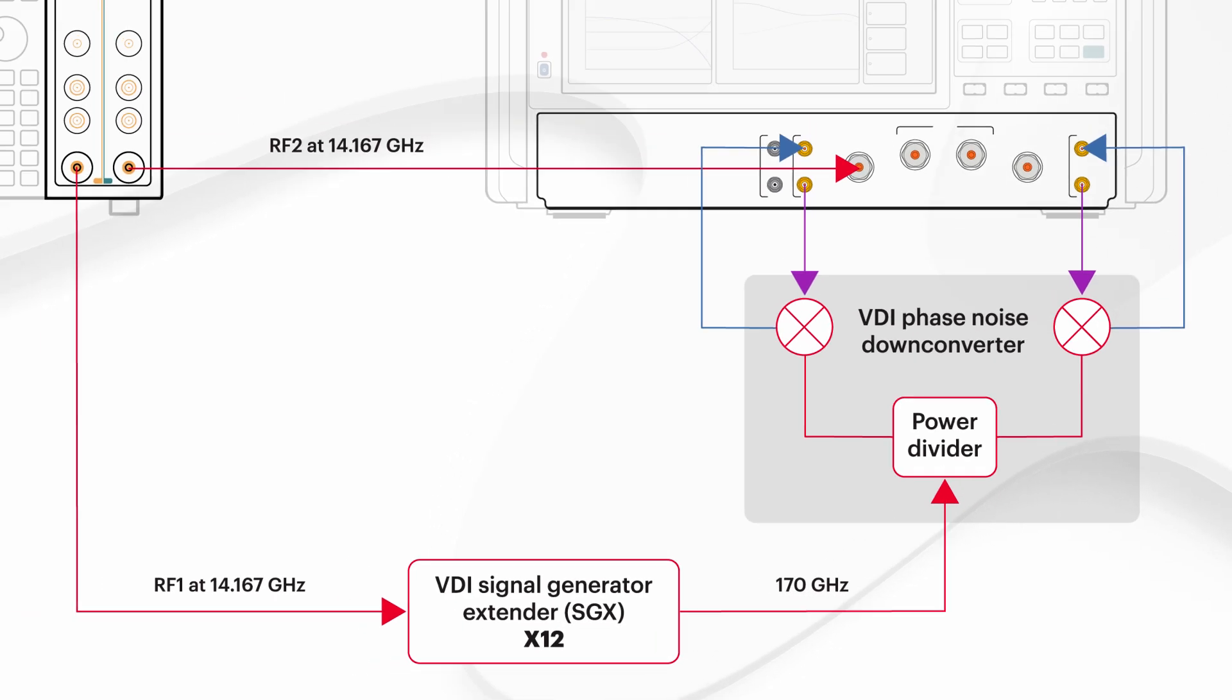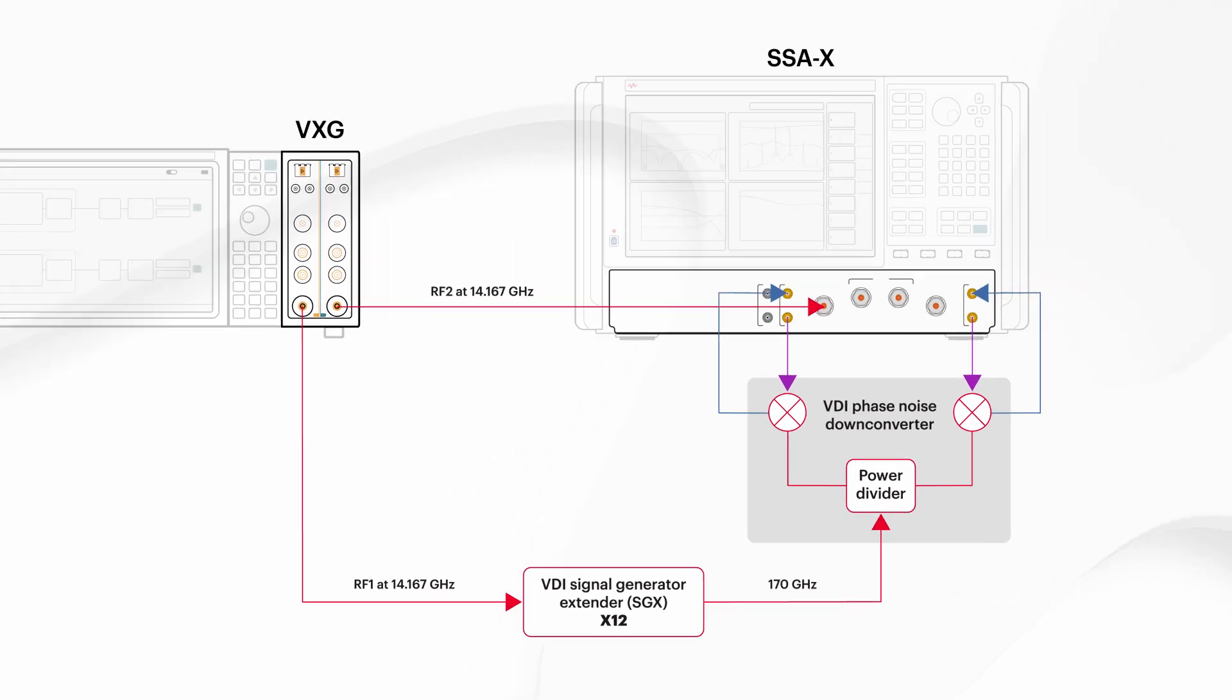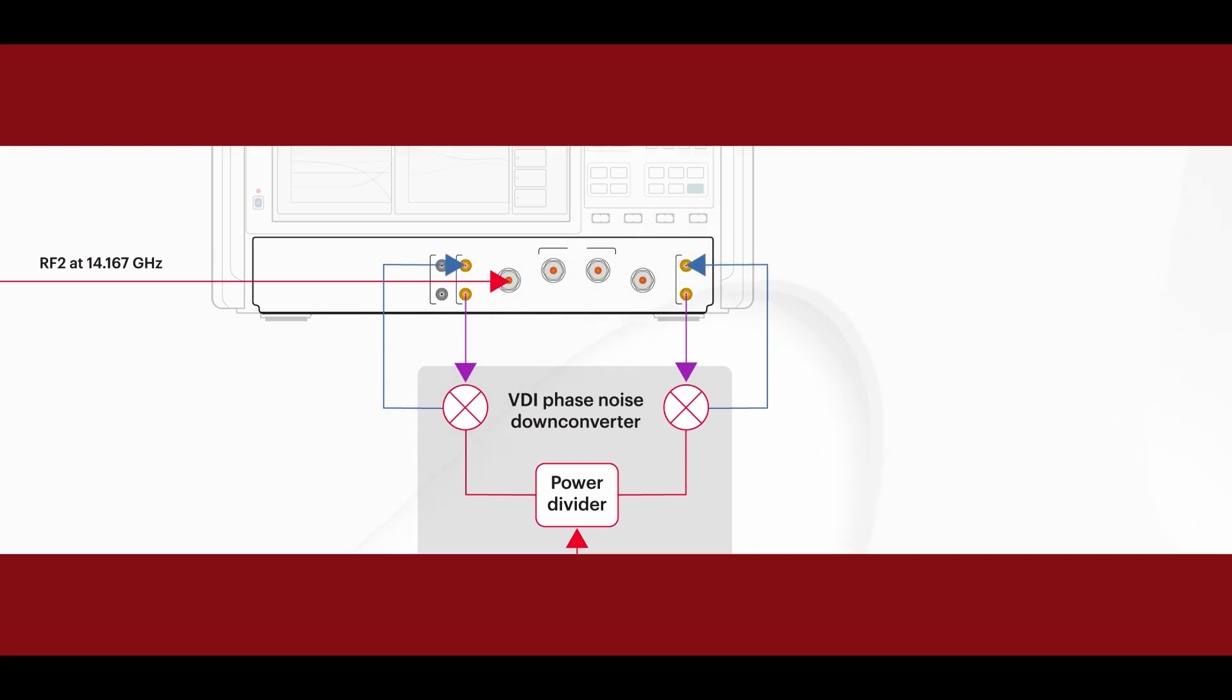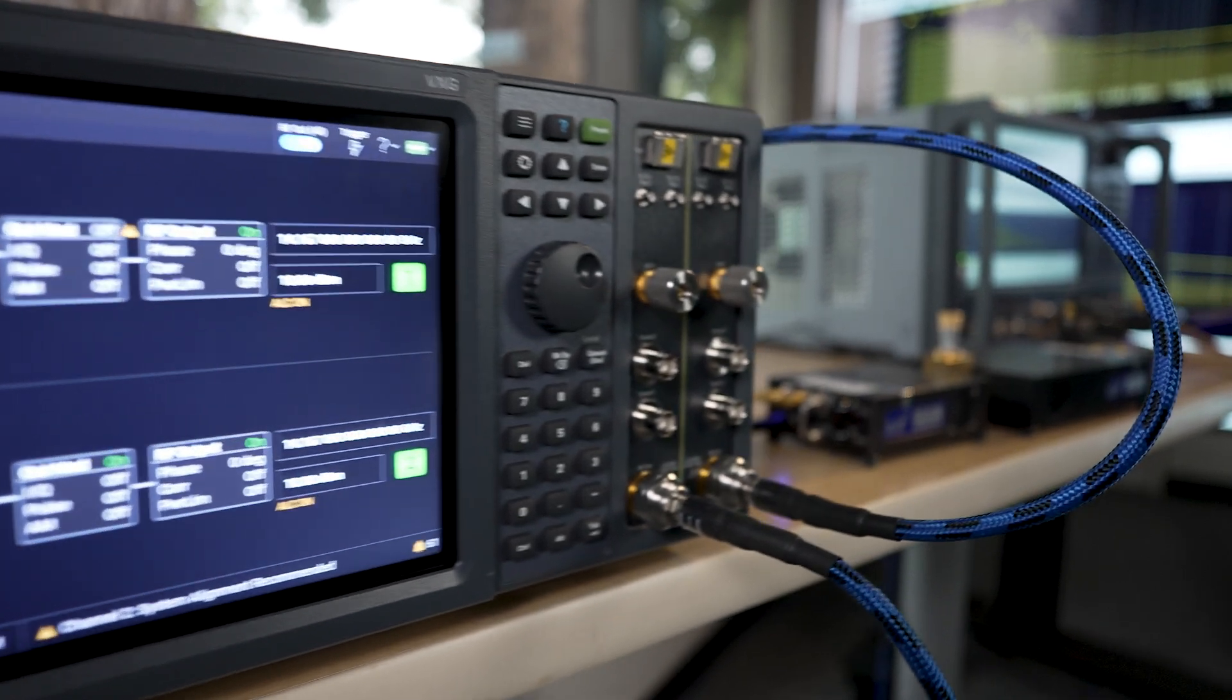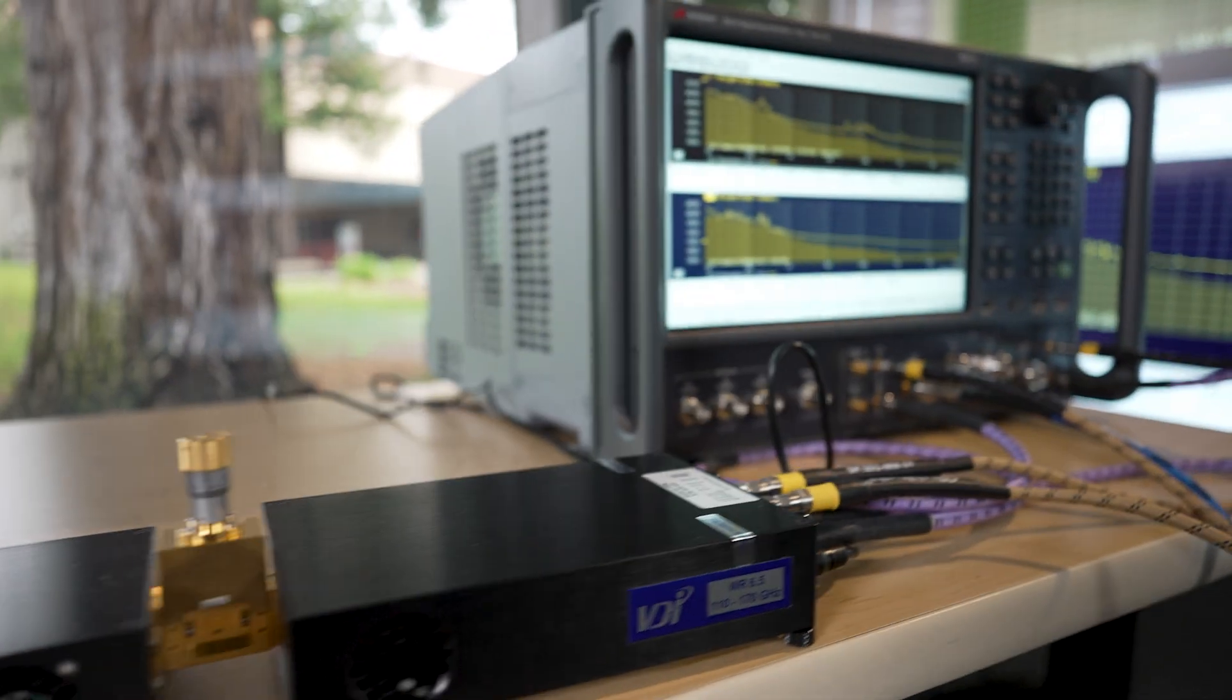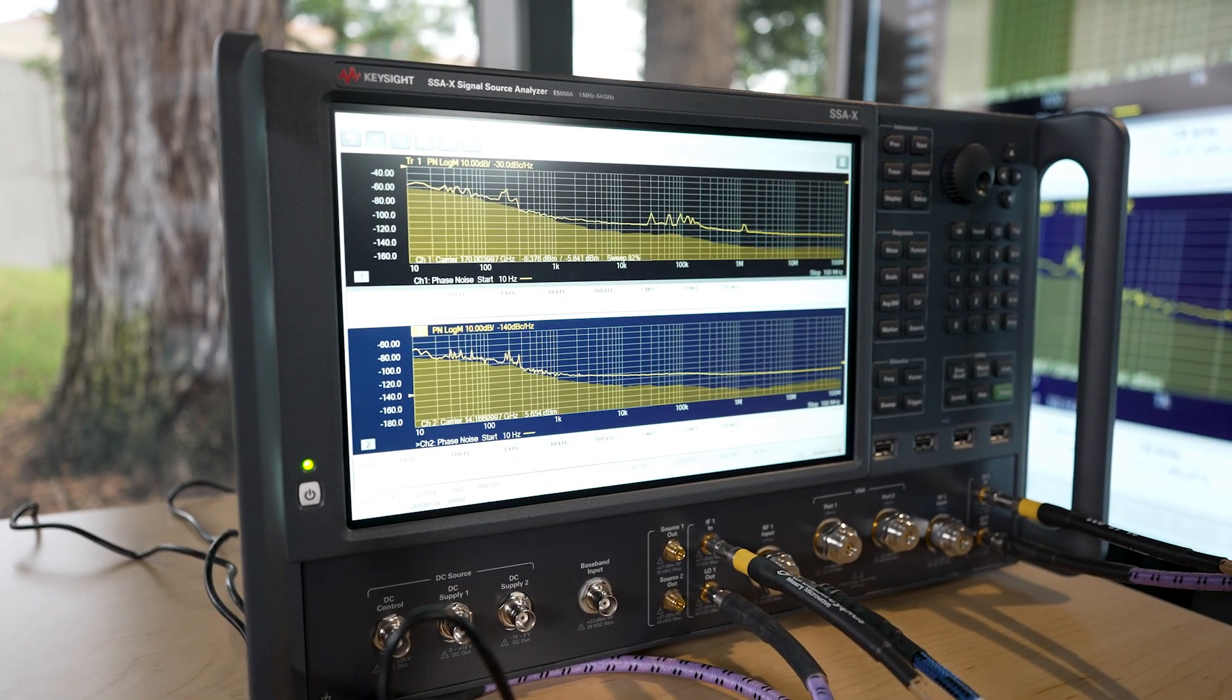The other VXG RF output is also at 14.167 gigahertz but is directly connected to the SSA-X. The 170 gigahertz D-band signal under test goes into the down converter and the SSA-X sends two independent LO signals to the down converter and receives the IF outputs from the down converter, allowing the SSA-X to remove the uncorrelated system noise from the down converter and its own internal dual channel receivers with cross-correlation and thus ensuring we are only measuring the device under test and not the test system.